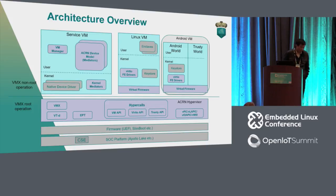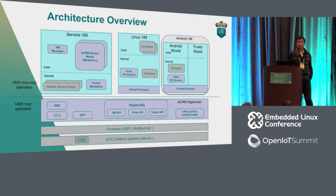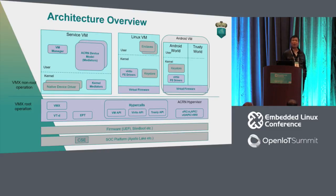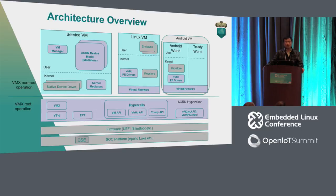Let's look at the ACRN architecture. ACRN is a type 1 hypervisor running on top of bare metal hardware and firmware. ACRN relies on the service VM to manage the hardware device, so that ACRN itself can be very small and simple. This is particularly important for the embedded ecosystem because in some situations and some usages,